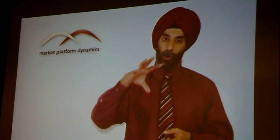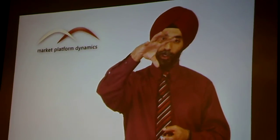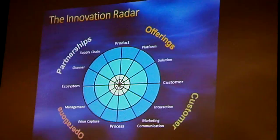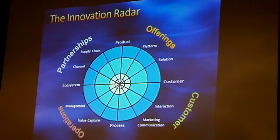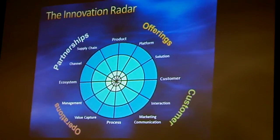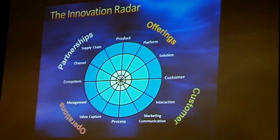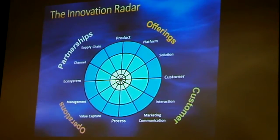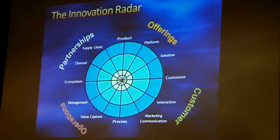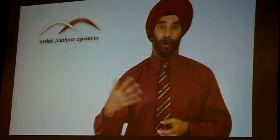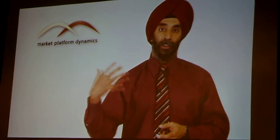If you look at the first quadrant — product, platform, and solutions — those are all innovations related to your offerings. That's the first type of innovation strategy a firm can have, which is offering-centric innovation. It relates to the 'what' of a firm: what it produces as products, services, and solutions.